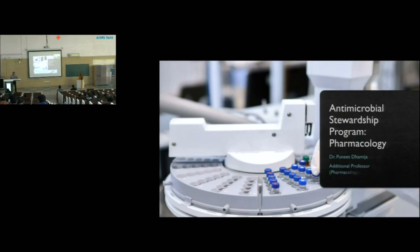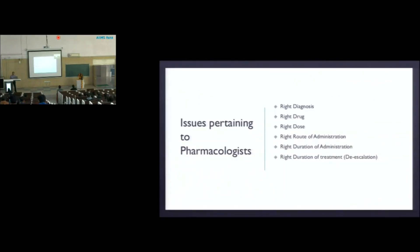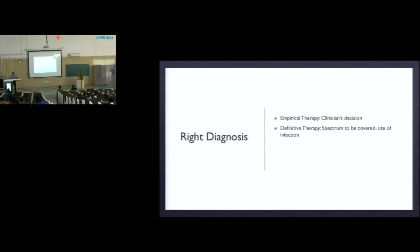Starting with the stewardship program — everybody knows what it means, so we are not going to discuss that further. Diagnosis is the clinician's responsibility and we will not go into that. Then comes the issue of empirical therapy and definitive therapy — whether therapy has to be given according to the spectrum of the drug. Nursing staff can also pitch in here; empirical therapy is usually the clinician's decision.